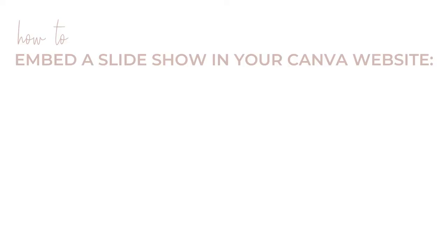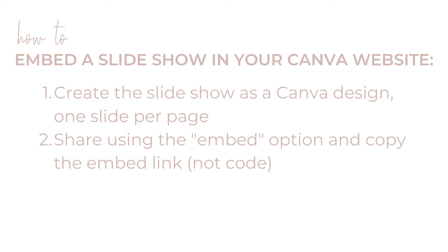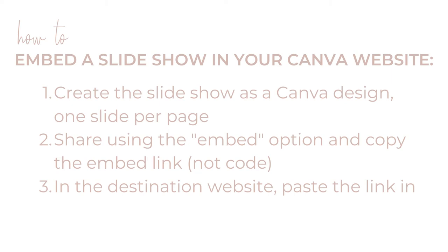To recap, your step-by-step plan: Step one, create a Canva design to be a slideshow with one page per slide. Step two, select to share it using the embed option and copy the embed link — not the embed code. Step three, in the website that will contain your slideshow, select the destination page and hit Ctrl+V (or Cmd+V on Mac) to paste the design in, then reposition or resize it as needed. Be sure to leave space for the user to navigate to the next page of the site. Step four, share your website as usual and the viewer will be able to navigate through your slides.